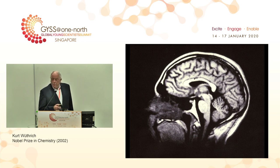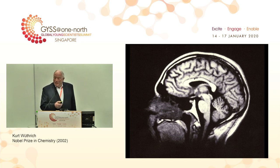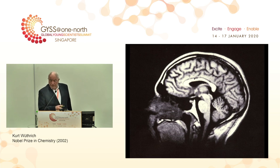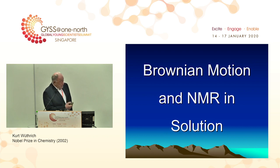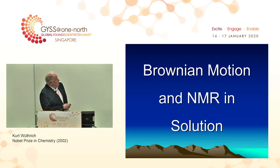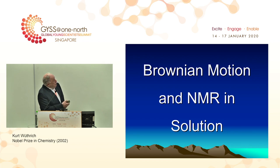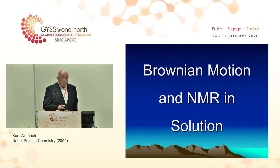The brain is an ideal organ to be studied by MRI, also because it doesn't move around — the heart moves, so you have to adjust the technology to look at the heart; the lung, the kidneys — every part of the body that contains a large amount of water is observed by MRI. The reason for this is due to the Brownian motion of the water molecules and the inhibited motion of all the other parts of the body when we apply the NMR methodology.